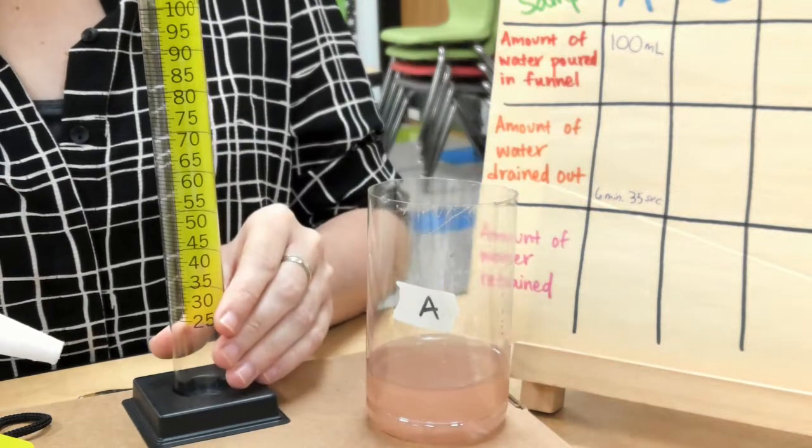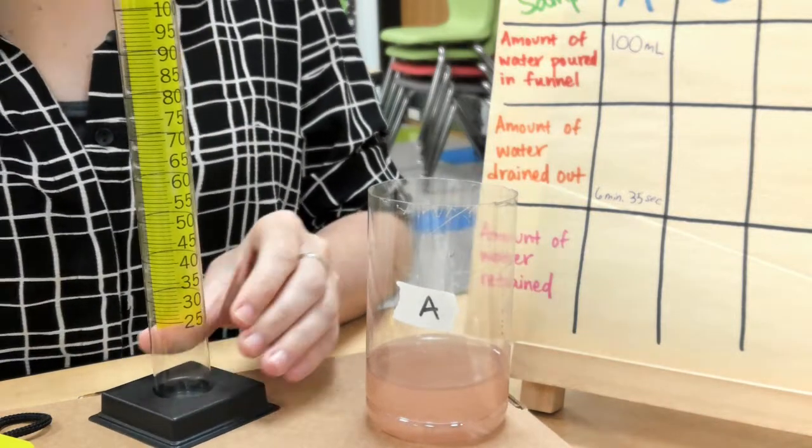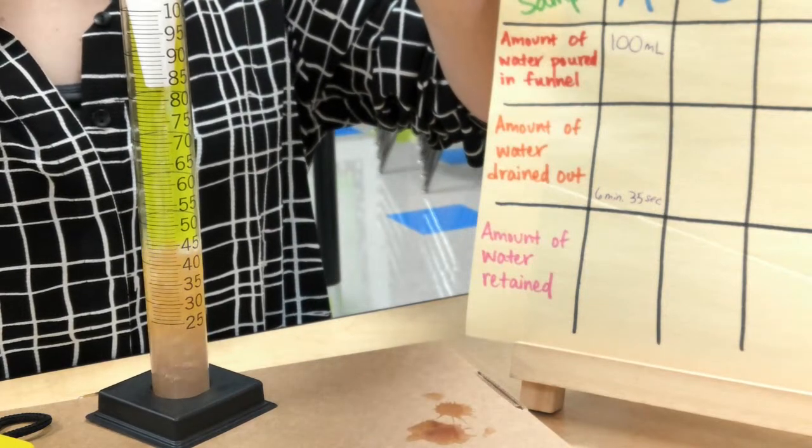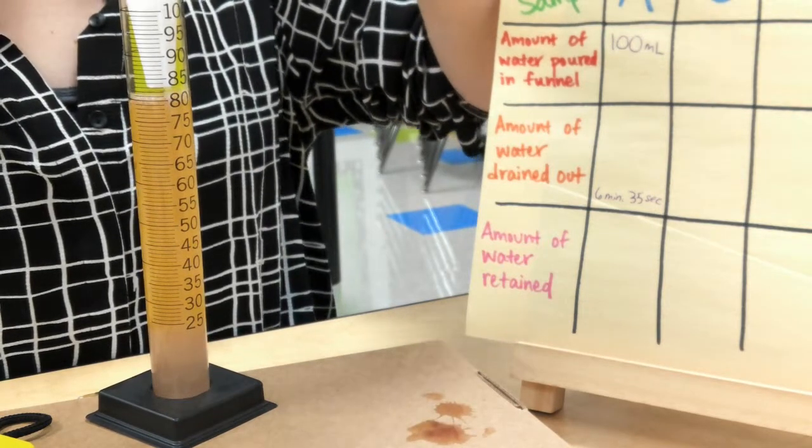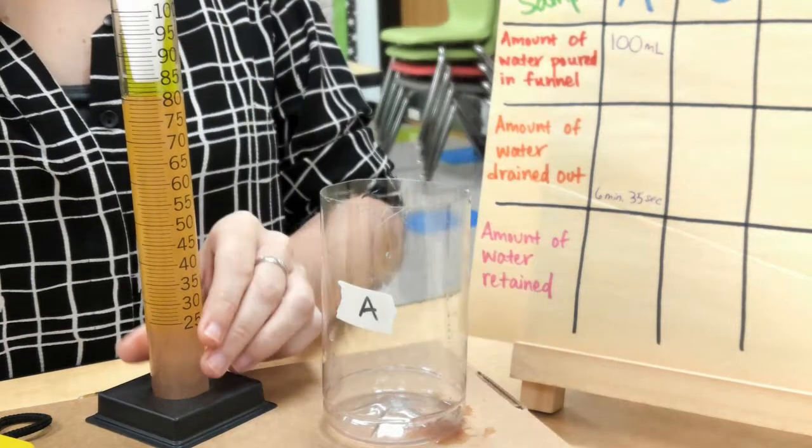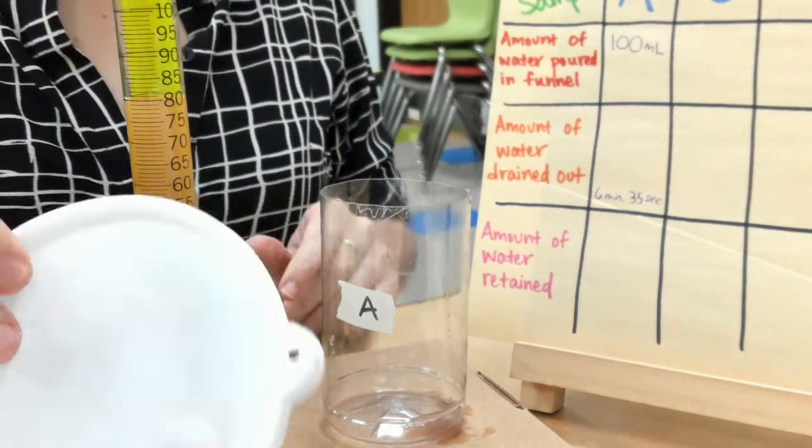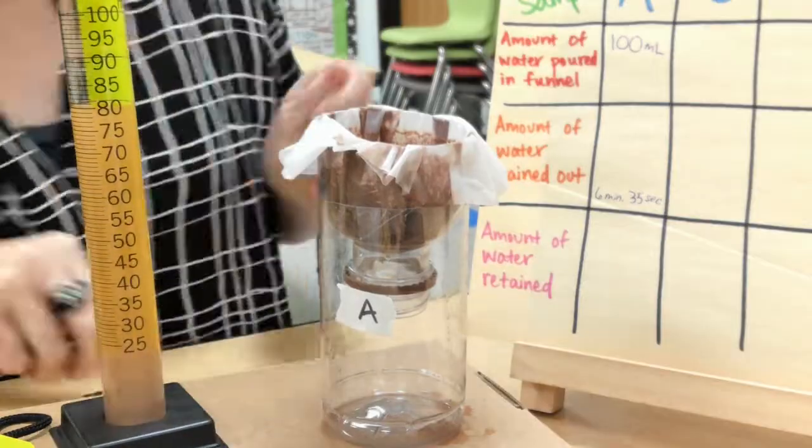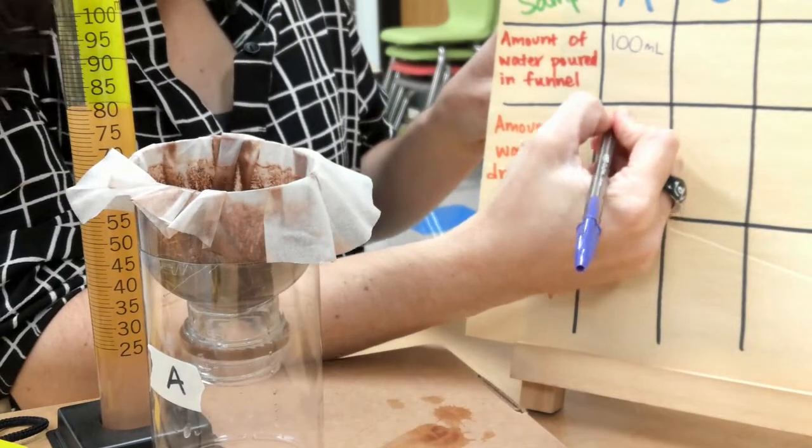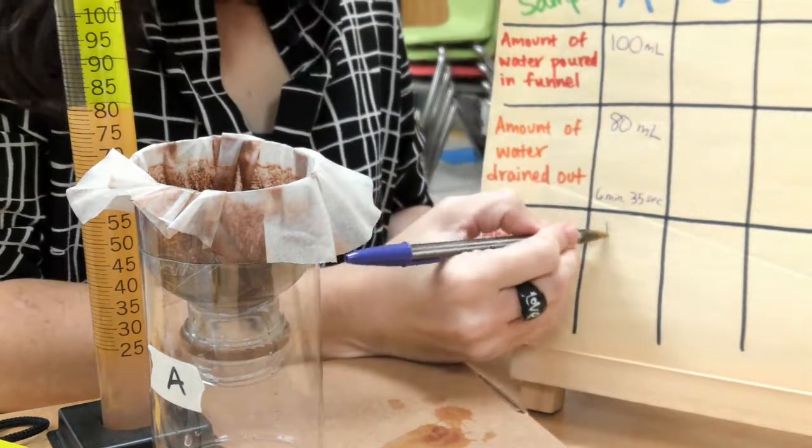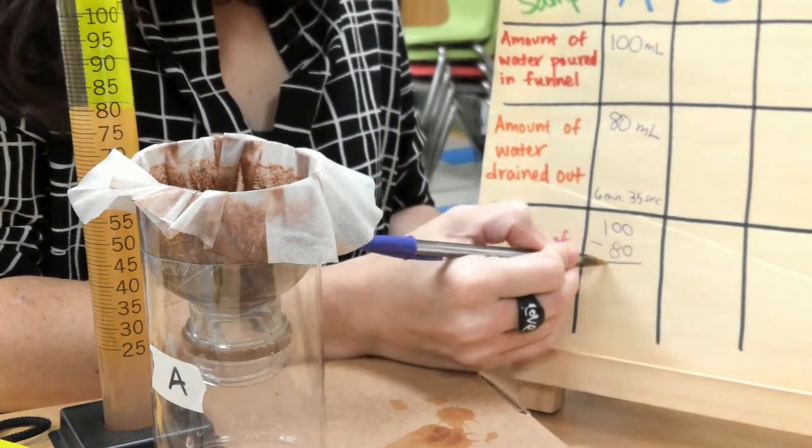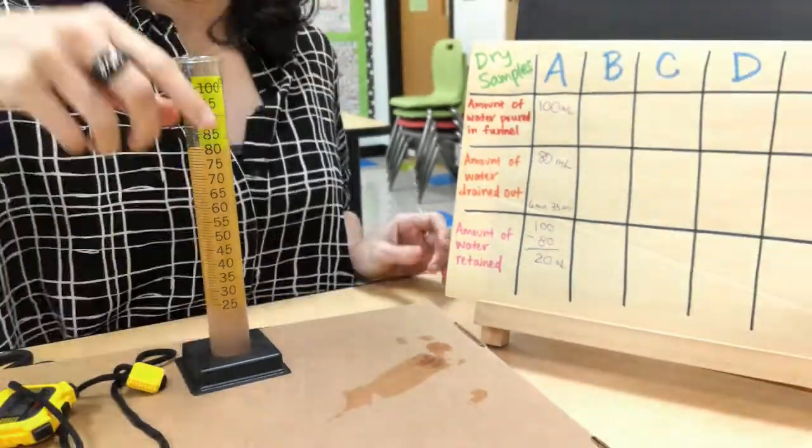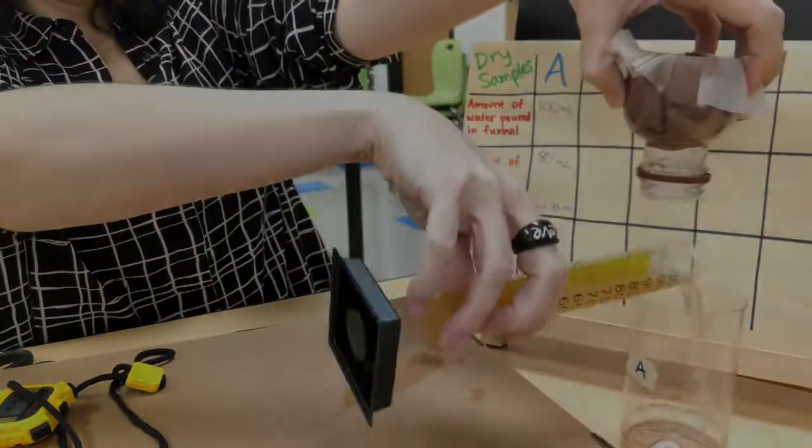Moving on to step nine, this is when you'll need to carefully remove the top funnel from the bottom part of the bottle. And, you're going to carefully pour all of that collected water into a new graduated cylinder. Step ten, you're going to measure the amount of this collected water accurately as best as you can and record this measurement in milliliters.